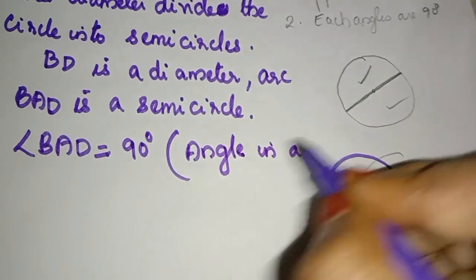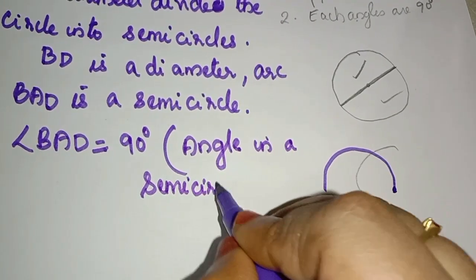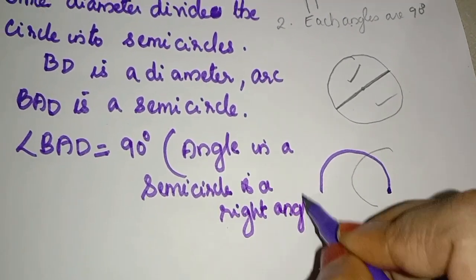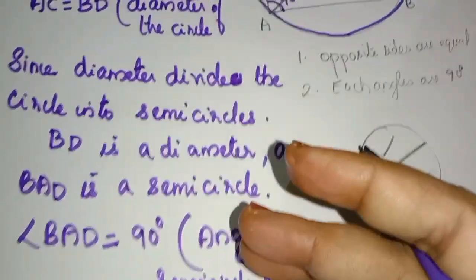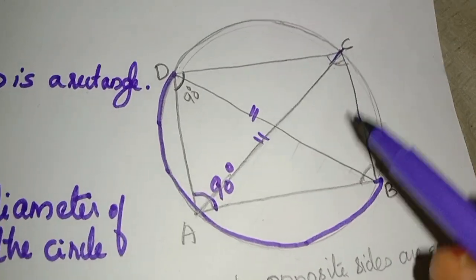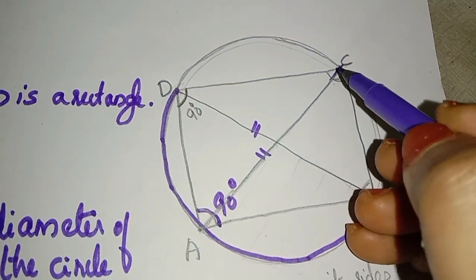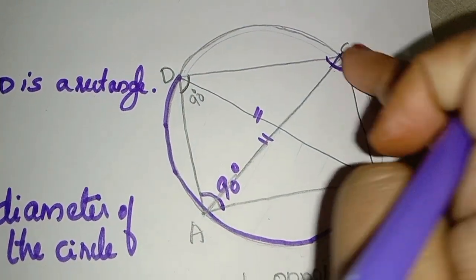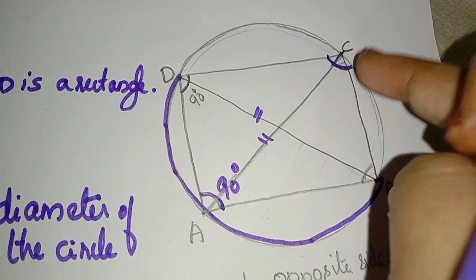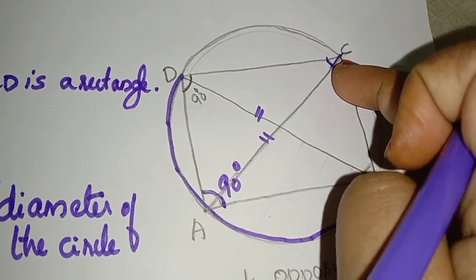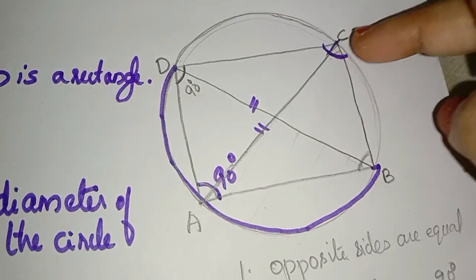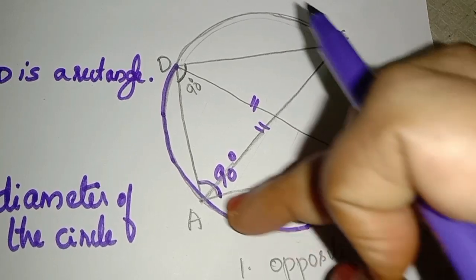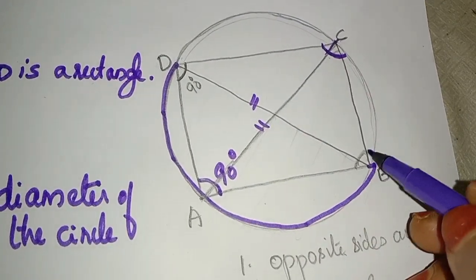Angle in a semicircle is a right angle. So we call AC as a diameter, arc ABC is a semicircle, and the angle is 90 degrees.